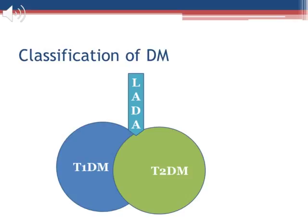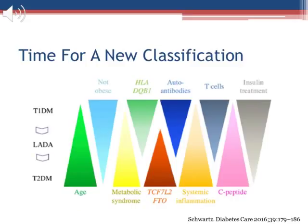Latent autoimmune diabetes, or LADA, in adults is a phenotype that carries a lot of controversy. Does LADA constitute a form of type 2 diabetes with earlier fast destruction of beta cells, or a late manifestation of type 1 diabetes? The use of insulin resistance to define type 2 diabetes may also need some work. Many obese patients with insulin resistance do not develop diabetes, which indicates that insulin resistance is insufficient to cause type 2 diabetes without predisposing factors that affect beta cell function. So instead of thinking about type 1 and type 2 diabetes as bucket categories, we really need to start thinking of diabetes as a spectrum.